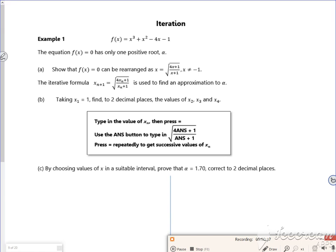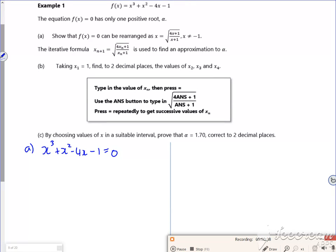Okay, so how am I going to do this then? A lot of these rearrangements can be really easy to spot, some of them not so easy to spot. x³ + x² - 4x - 1 = 0. Look at this 4x plus 1, how it's on the top on its own, so I think that's a good place to take over the 4x plus 1.